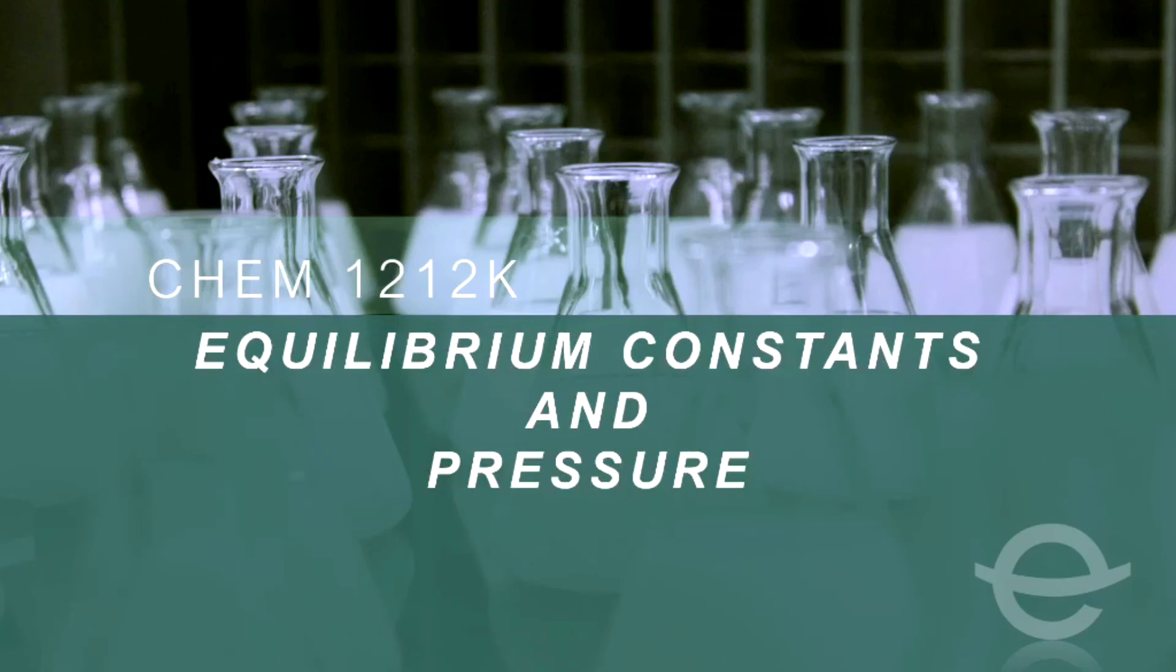In this lesson, we're going to talk about equilibrium constants and pressure. The basic idea here is that when we have gaseous reactants and products, we can actually use something called partial pressures to write our equilibrium expressions. Now that sounds like a lot, so let's take a few moments here and figure out what exactly I'm saying.